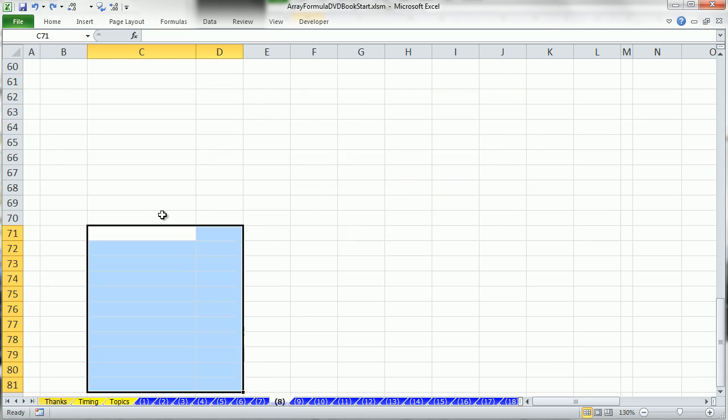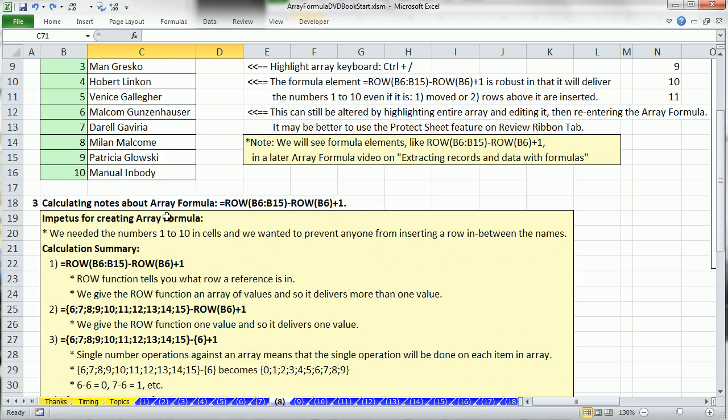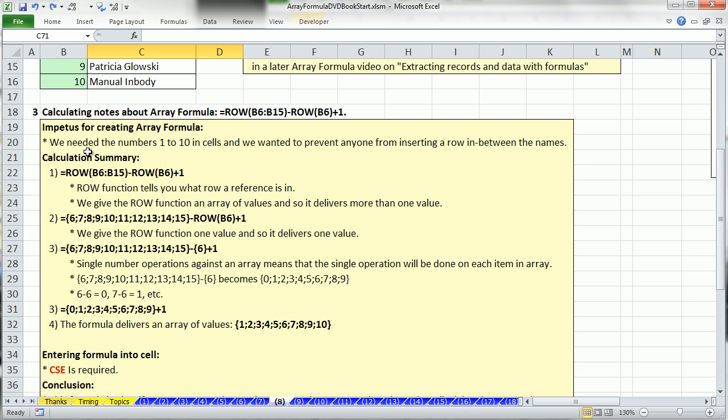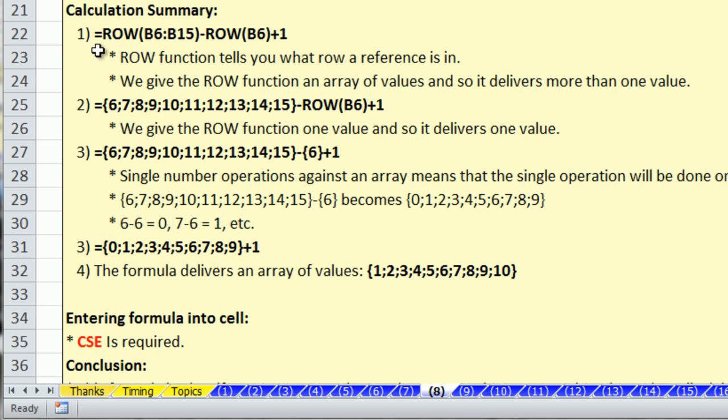One last thing, escape to turn those dancing ants off. A lot of times, these calculating notes are quite good. Notice, this row minus row plus 1, this is an array calculation which generates those. Then the row gives us 6.